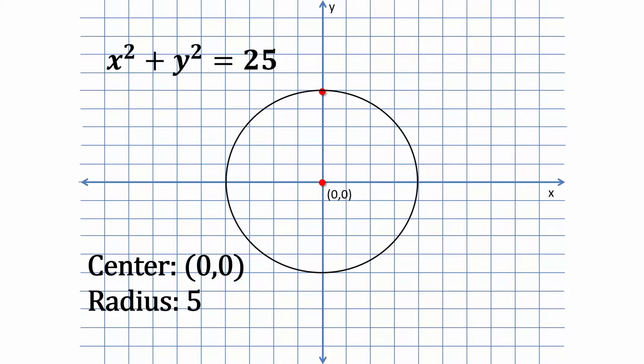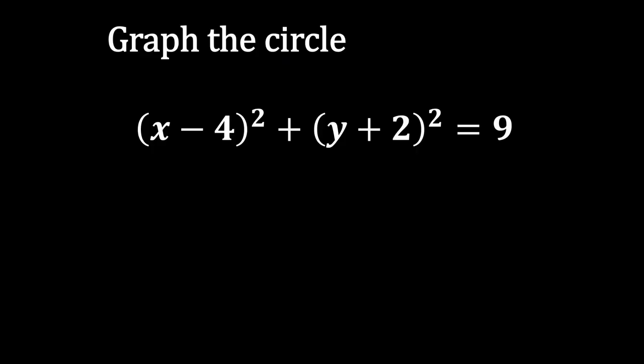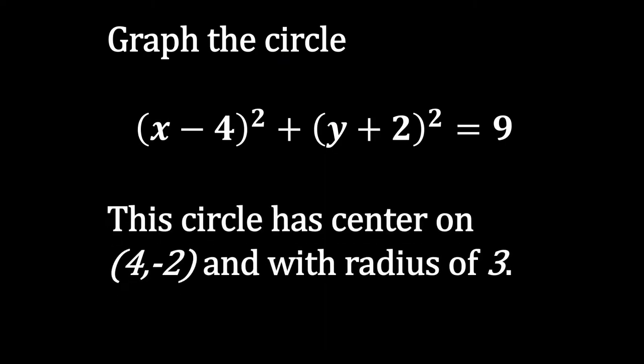Next, graph the circle (x - 4)² + (y + 2)² = 9. This circle has center on (4, -2) and with radius of 3.